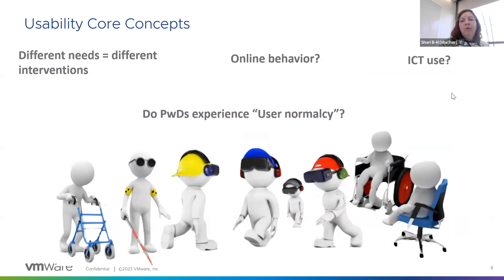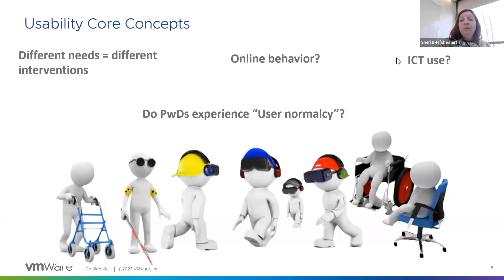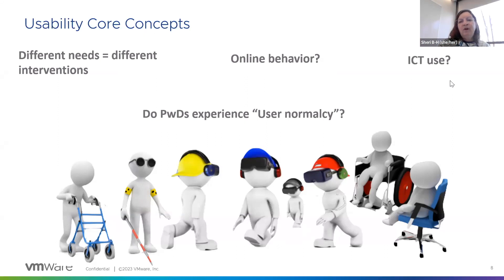People with different needs require different interventions. When we look at disabilities under a single umbrella, it's 20%, but if you look at any one disability, it's a much smaller amount. Somebody with dyslexia doesn't have the same needs as somebody who uses a keyboard or needs magnification for vision loss. When recruiting, you need to make sure you're recruiting a good sample of people with disabilities. Consider their online behavior — do they experience what we'd call user normalcy? And do they use ICT — information and communications technology — and how much?